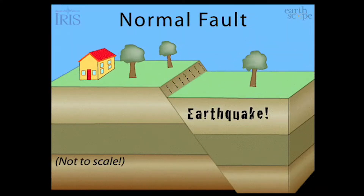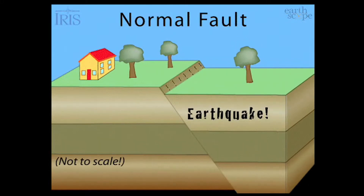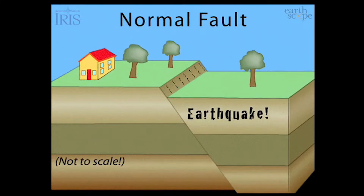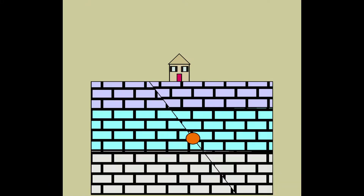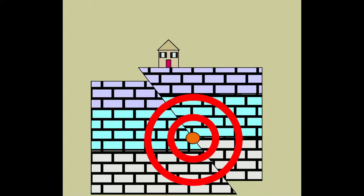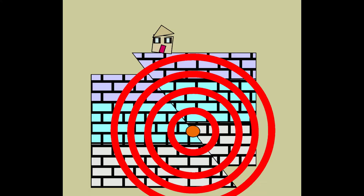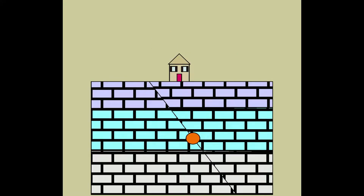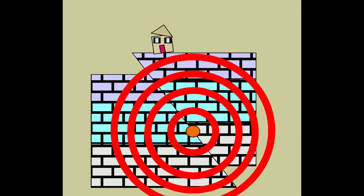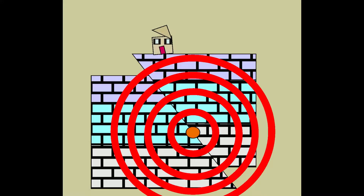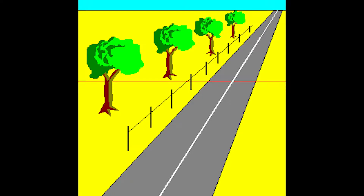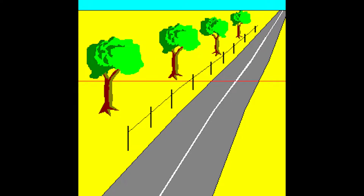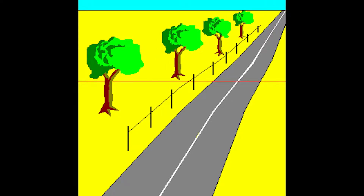They are caused because plates are always slowly moving, and due to friction they get stuck. When the stress on the edge overcomes the friction, it releases energy in waves that travel through the earth's crust and cause the shaking that we feel, called an earthquake.